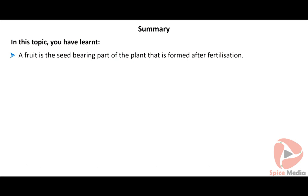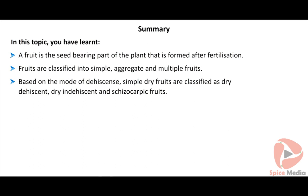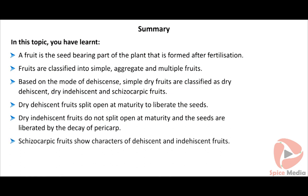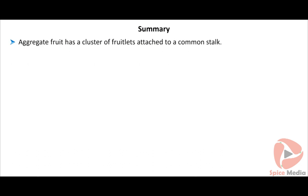In summary: a fruit is the seed-bearing part of the plant formed after fertilization. Fruits are classified into simple, aggregate, and multiple fruits. Based on mode of dehiscence, simple dry fruits are classified as dry dehiscent, dry indehiscent, and schizocarpic. Dry dehiscent fruits split open at maturity; dry indehiscent fruits do not split open and seeds are liberated by decay of the pericarp. Schizocarpic fruits show characters of both dehiscent and indehiscent fruits. Aggregate fruit has a cluster of fruitlets on a common stock. Sorosus and psychonus are the two types of multiple fruits.